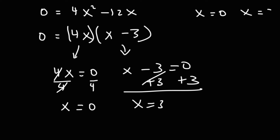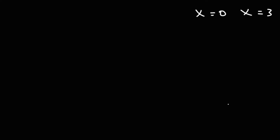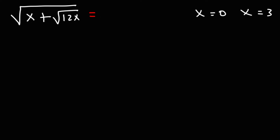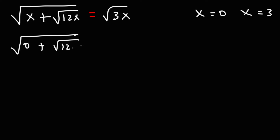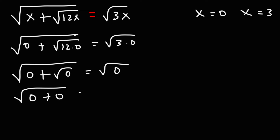So these are the two possible solutions. Let's rewrite the original equation: the square root of x plus the square root of 12x is equal to the square root of 3x. Let's start with x equals 0. 12 times 0 is 0, and 3 times 0 is 0. The square root of 0 is 0. 0 plus 0 is 0, and this is going to work.